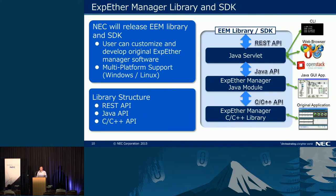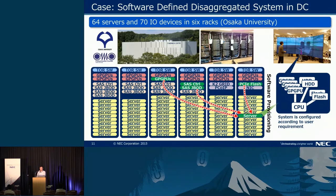To control the system configuration, we will release the XPS Ether management library and SDK. This library has three kinds of API: C, C++, Java API, and REST API. The REST API is used for the OpenStack controller. We have already shipped the XPS Ether product. This is an actual system at Osaka University.